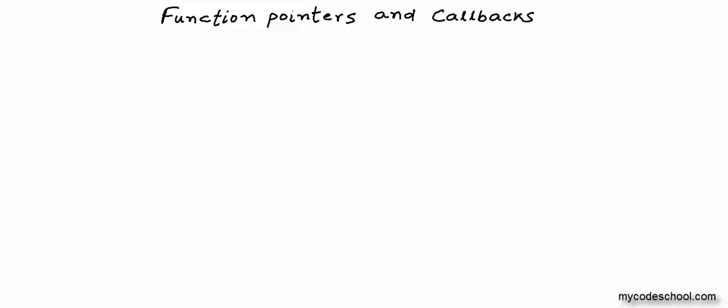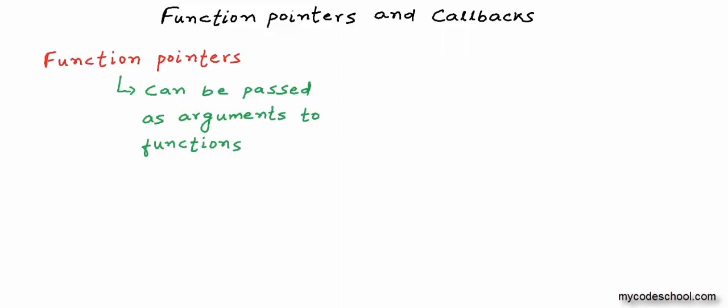All the use cases of function pointers are around this concept: function pointers can be passed as arguments to functions, and then a function that receives a function pointer as an argument can call back the function that this pointer points to. To explain this better, I will have to write some code.